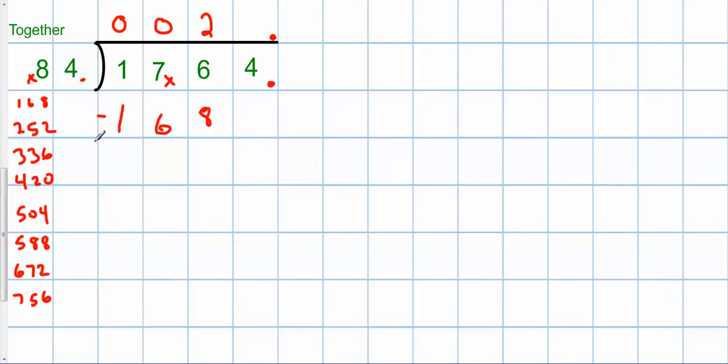So I'm going to subtract. And I'm going to borrow. That becomes a 6. I get 8. Bring down the 4. That's one group. Multiply. 84. So 84 hundredths divided by 17 and 64 hundredths is 21.